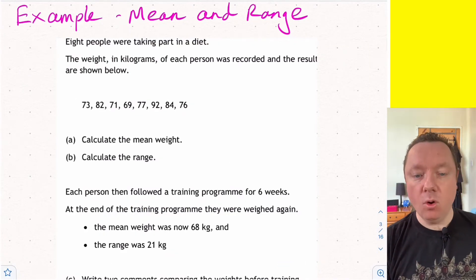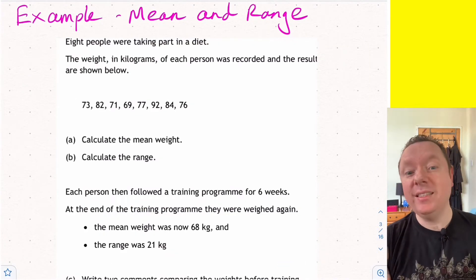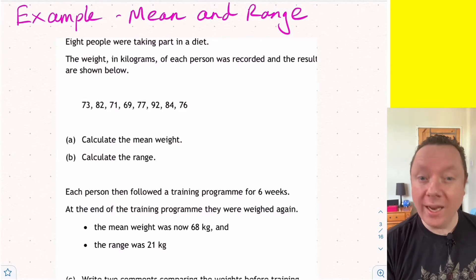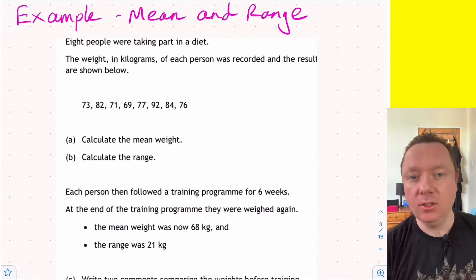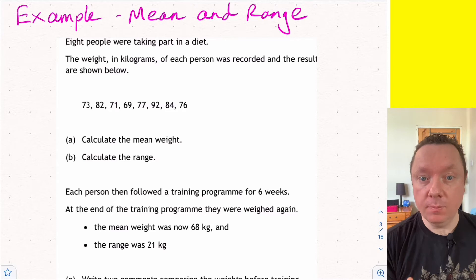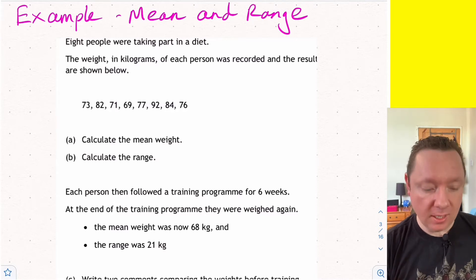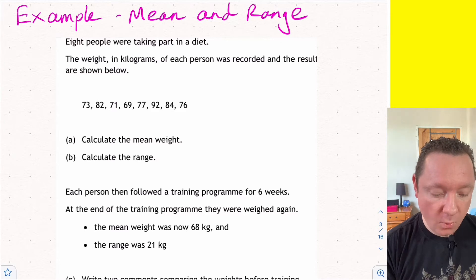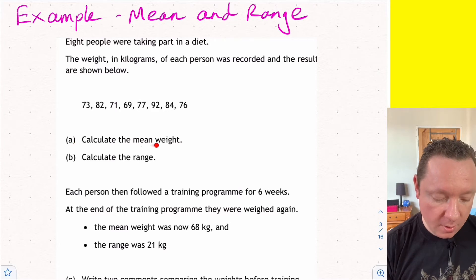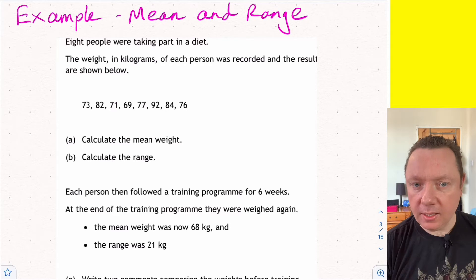Okay, let's look at an example of working out the mean and the range. These are types of averages. Don't get worried about them. The question's going to be quite wordy, but most of the time it's just doing a simple sum and then trying to make some sort of comparison by writing a standard statement. So let's look at it. It says 8 people were taking part in a diet, and the weight in kilograms of each person was recorded. Part A, calculate the mean. Part B, calculate the range.